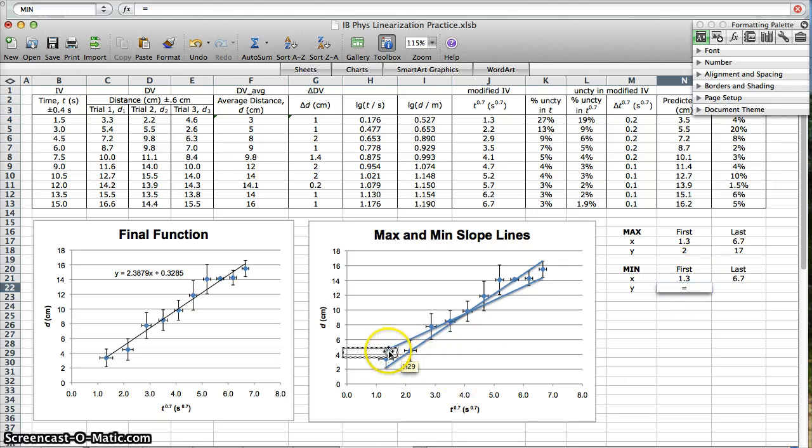So my first y value for the min slope line, I find the first y value on the graph. Distance, distance. And from that y value, I've gone up the error bar. So I add the uncertainty. Whoops. Plus add the uncertainty for the min slope.